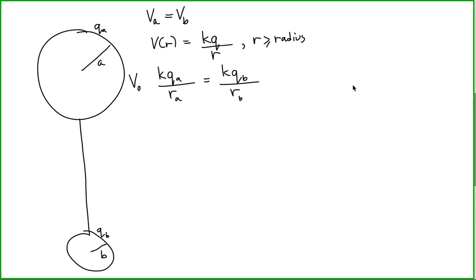I've equated these two expressions because since these are conductors in electrostatic equilibrium that are connected, the electric potential is constant on each conductor. Now that we have this relationship between the electric potential and the charges on each conductor, we can determine the ratio of the charge on each sphere. We have KQA over A equal to KQB over B.